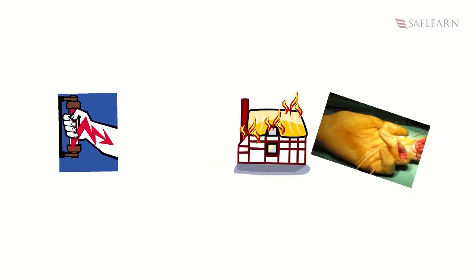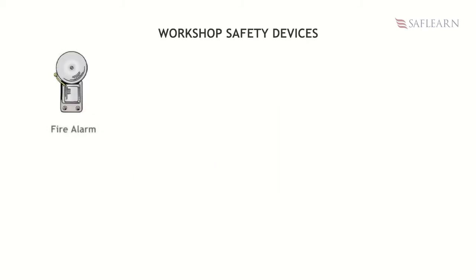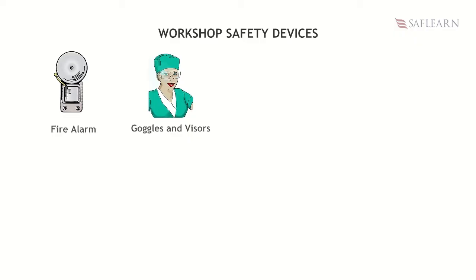Now that we've learned about the categories of accidents, it is important to also know the safety devices that should be used or worn in the workshop to avoid these accidents. A fire alarm is equipment which sounds a warning noise whenever it detects the presence of smoke or fire in a building. Goggles and visors protect the eyes against metallic objects, dust, and high-intensity light.